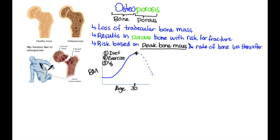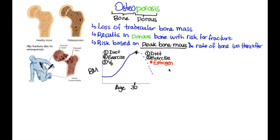What determines the rate of bone loss is going to be diet and exercise. Also, estrogen is protective. Post-menopausal women lose bone mass more rapidly. When you cross this border and come underneath this threshold in bone mass, the bone becomes weak and fractious, and that is called osteoporosis.